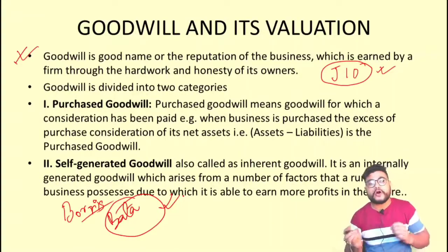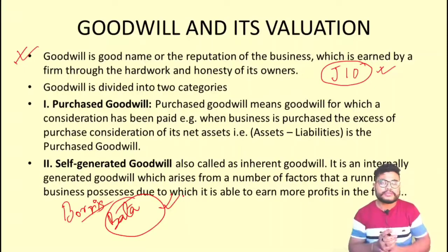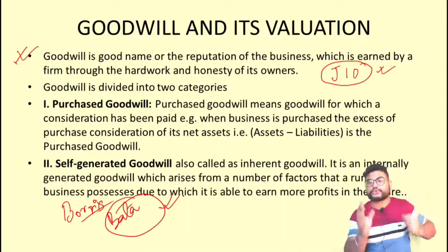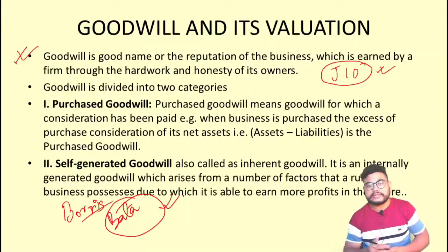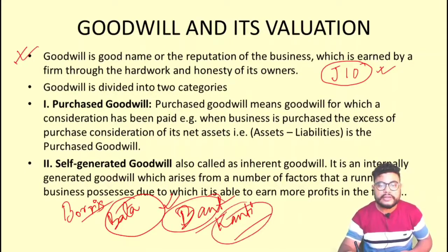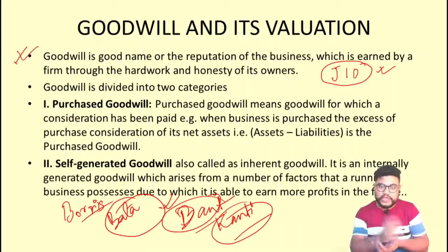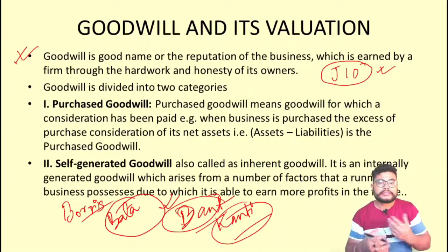Goodwill is actually the name and fame of the business due to which customers are retained. When a new product launches in the market, customers may try it, but customer retention is the real goodwill. For example, Dant Kanti by Patanjali is currently one of the best-selling toothpastes in India — Patanjali's fame comes from its Ayurvedic, agro-based, nature-connected products.